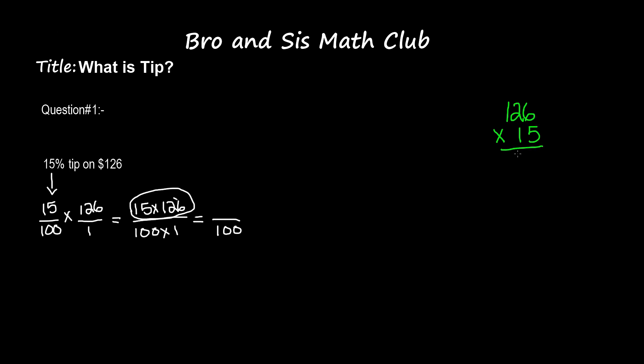So we have 126 times 15. 5 times 126 is going to give us 630, and then we add 0 because we're moving on to the tenth place value, and then 1 times 126 gives us 126, and then we add this whole amount.